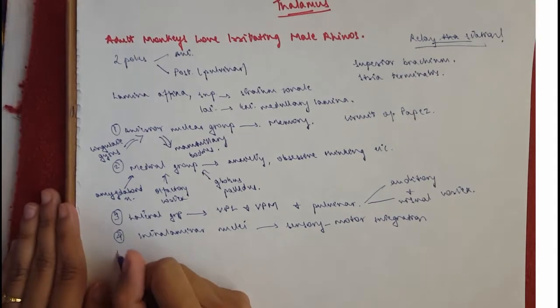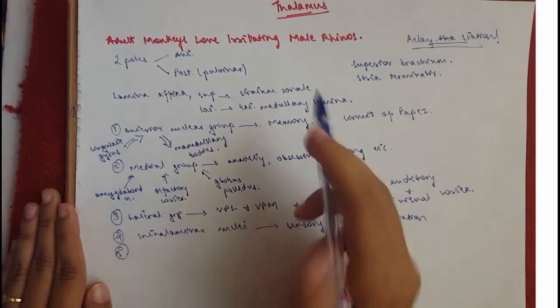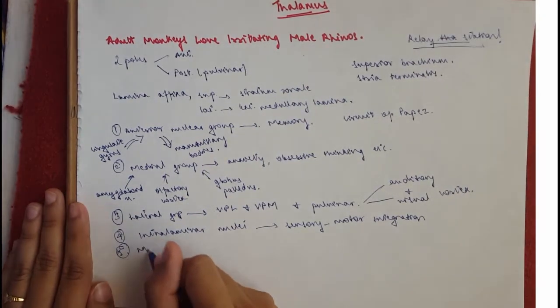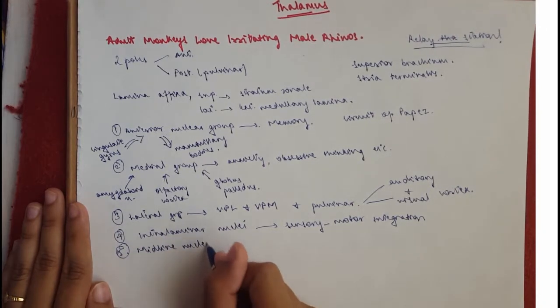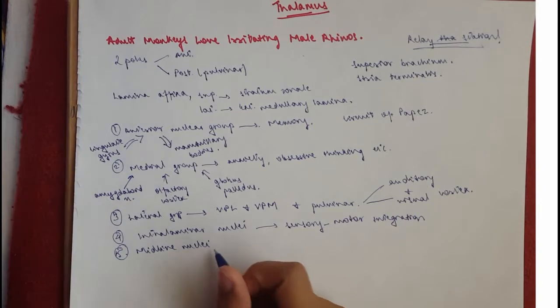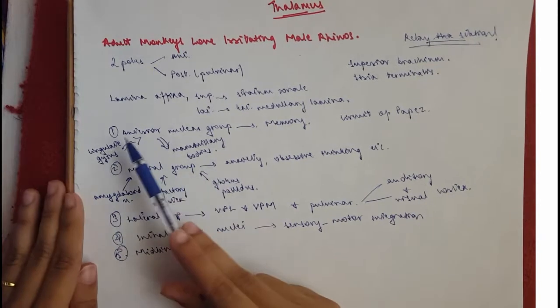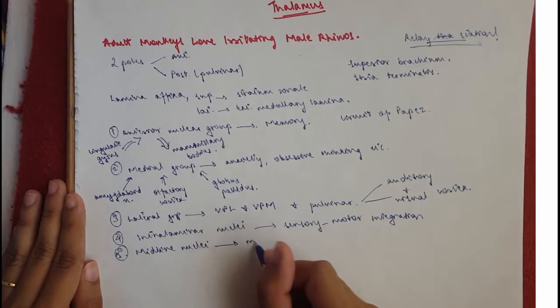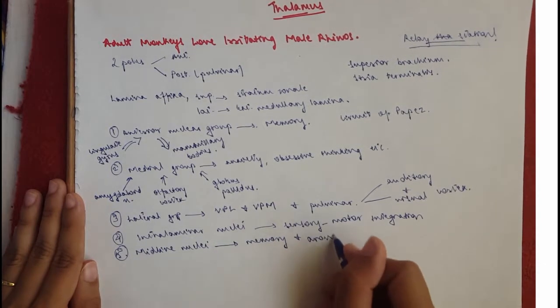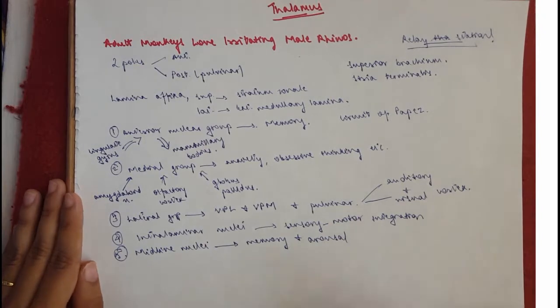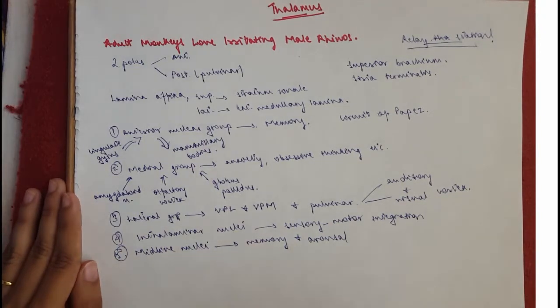Okay then we've got number five which is the male and that would be the midline nuclei. The midline nuclei is similar to the first one anterior nuclear group just because it's for memory and arousal. So it projects onto the amygdaloid, the hippocampus, the nucleus accumbens, all of the limbic system structures.